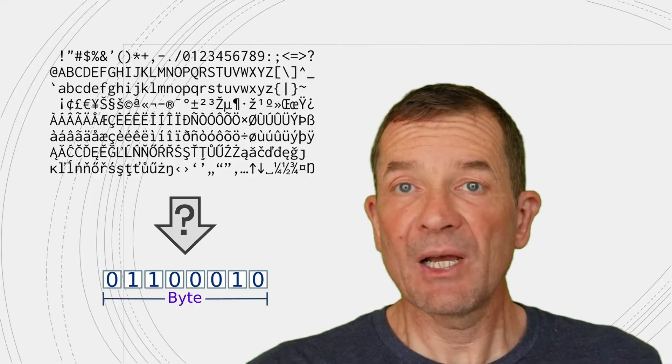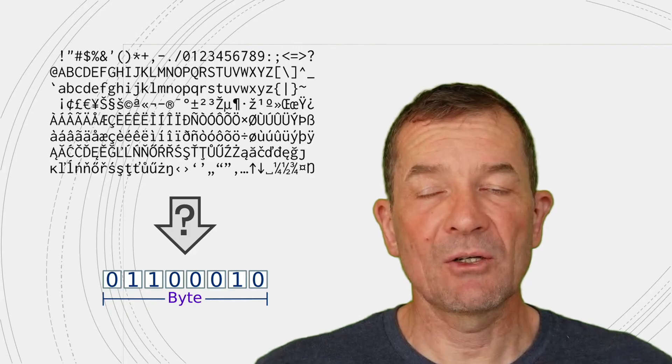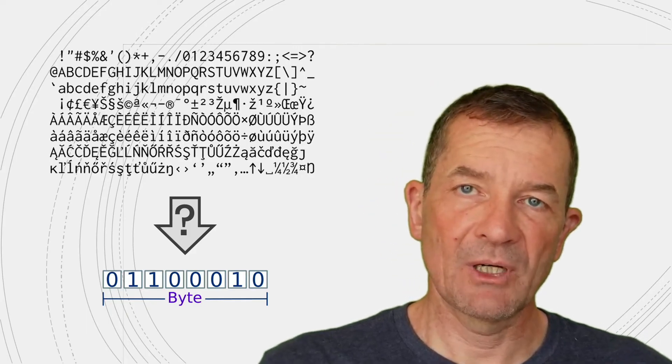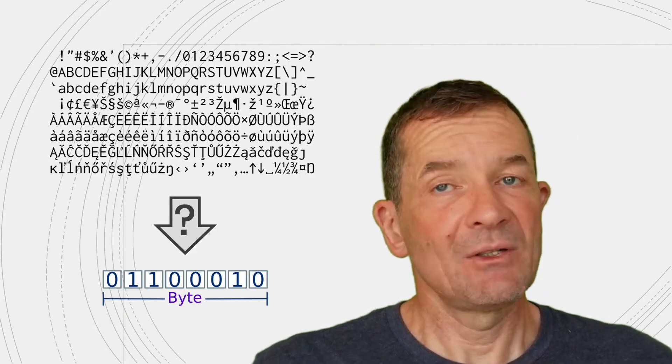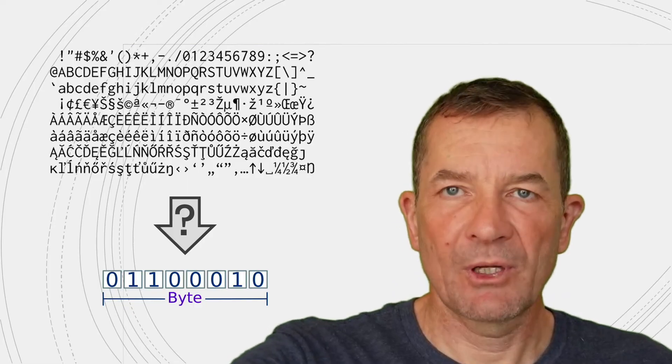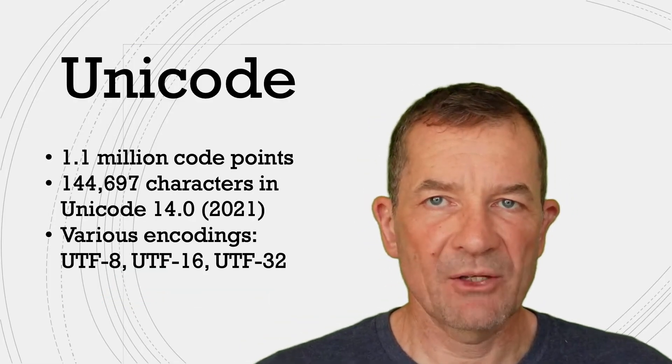Meaning that this simple idea of storing one character per byte or storing each character in exactly one byte won't work anymore. And this is where Unicode enters the picture.